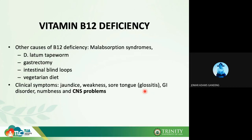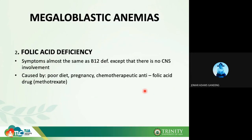Megaloblastic anemia can also be caused by folic acid (folate) deficiency. Symptoms are almost identical to B12 deficiency, with one key difference: there is no CNS involvement in folate deficiency. Causes include poor diet during pregnancy, and chemotherapeutic agents that are anti-folic acid, such as methotrexate.